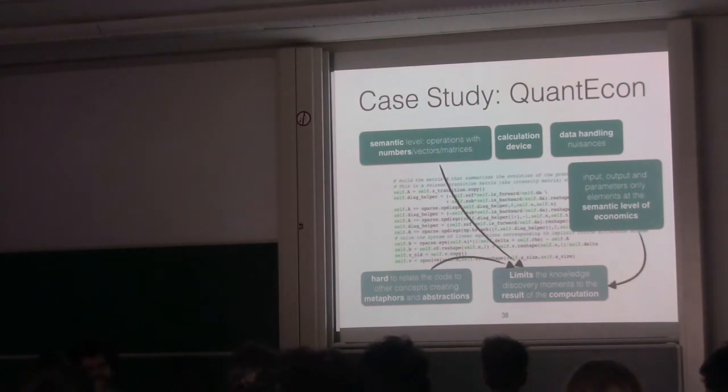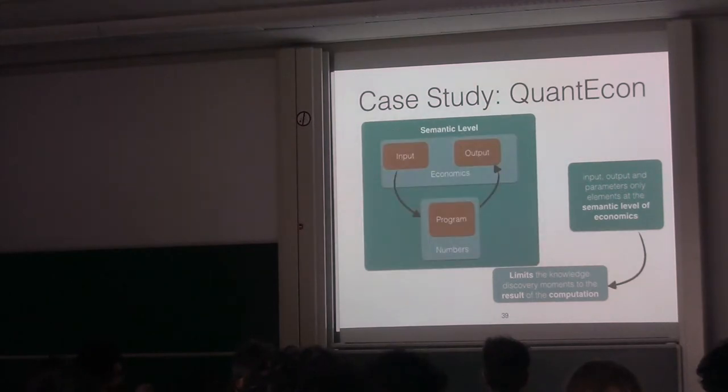All those things actually limit the knowledge discovery to the result of the computation. Basically, you get what you expected to get. So there are no knowledge, nothing new appears except the result of the computation. We can create this diagram. We see that both input and output are the only things that are at the level of economics, while the rest of the program is at the semantic level of numbers, very low level.